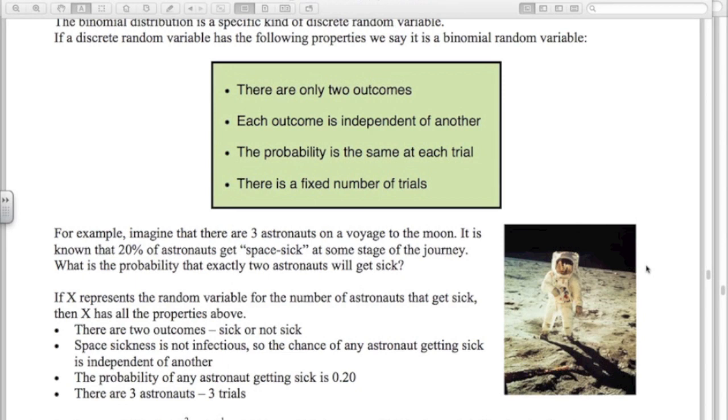So let's look at this. Is this a binomial random variable? Well, for each astronaut, there are two outcomes, sick or not sick. Space sickness is not infectious, so each astronaut getting sick is independent of the other. We know that overall the probability is 0.2. There's a 20% chance. So 0.2 is the probability that any given astronaut will get sick. And there's three astronauts, so three trials. So this is looking good for a binomial distribution.